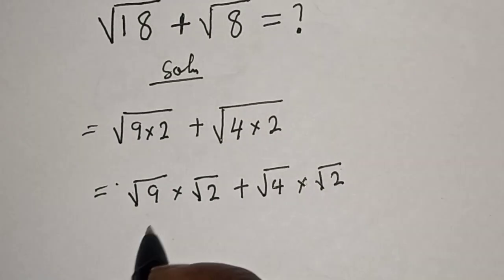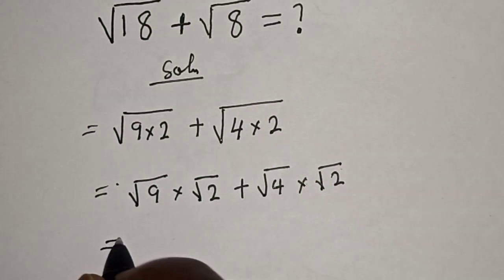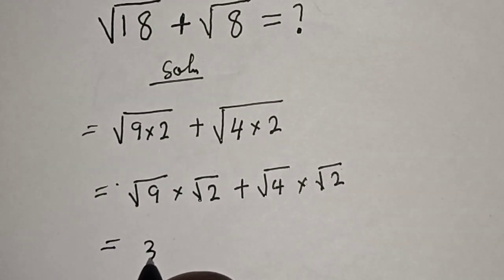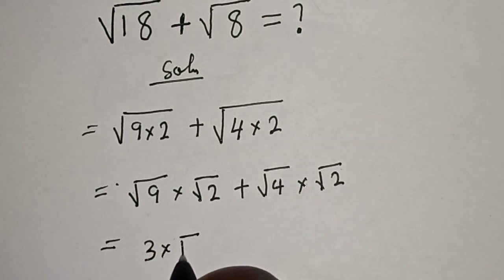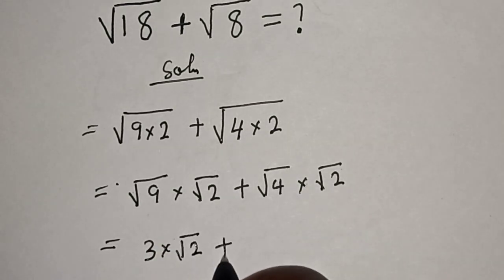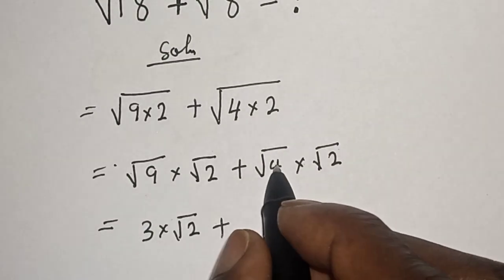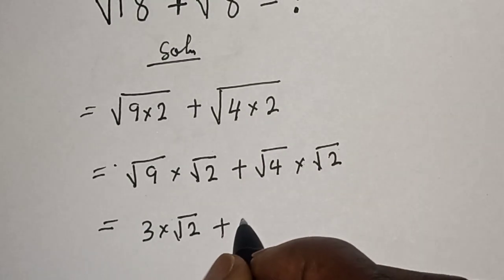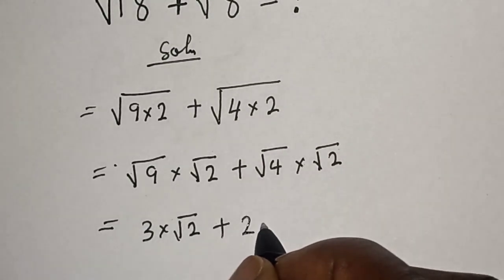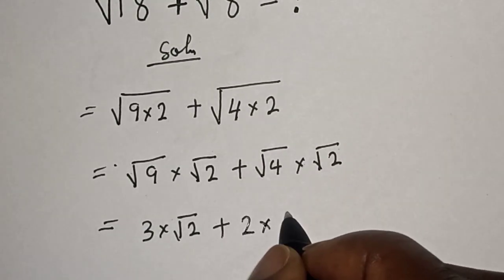Square root of 9 is 3, multiplied by square root of 2, plus square root of 4 is 2, multiplied by square root of 2.